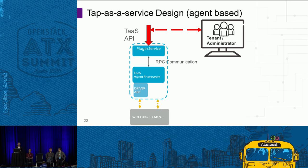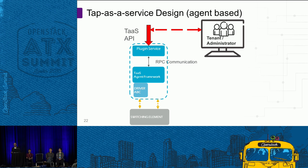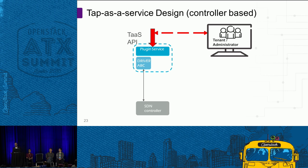We have successfully integrated with OVS. This is an agent-based implementation where a plugin service communicates with the TAP agent running on the compute node via RPC. The TAP agent then communicates with the driver using a driver mechanism, and we have created a driver for OVS which communicates with the switching element. Another implementation we are proposing, still under development, is a controller-based implementation where the TAP plugin service will directly communicate with your SDN controller without the use of an intermediate agent. However, this is still a work in progress and has not been implemented yet.